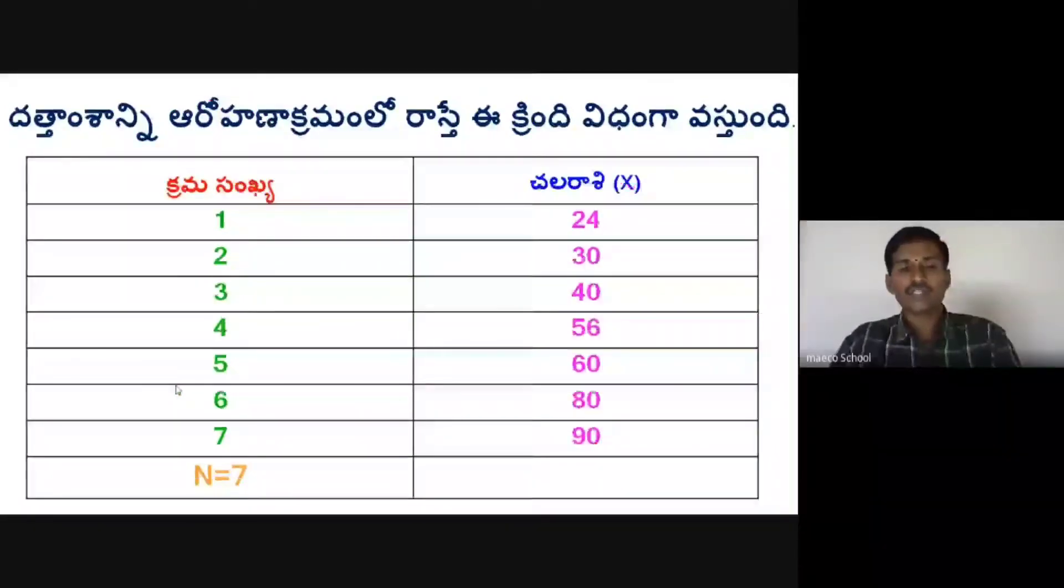First of all, we should arrange the data in ascending or descending order. We will arrange in ascending order, from least to highest. So, we can add serial numbers to find N. N refers to the number of observations.